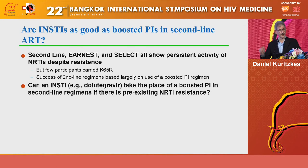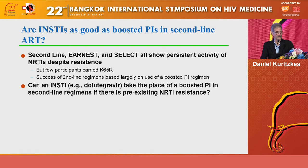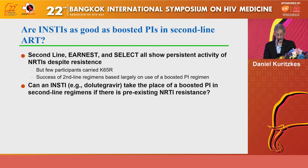The data I showed were all based on NNRTI failure and the use of boosted protease inhibitors in second-line regimens. What about the use of integrase inhibitors — are they as reliable and potent as boosted PIs for use in second-line? We know that the second-line studies — Ernest and Select — showed persistent activity of some nucleosides despite resistance, although very few participants in those trials had a K65R mutation conferring resistance to tenofovir, now the more common component of the viral backbone.